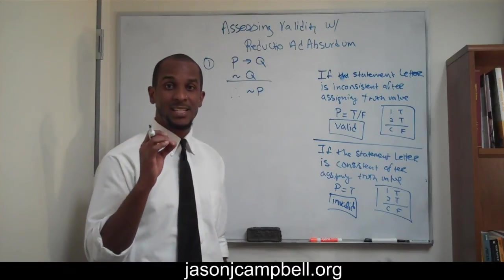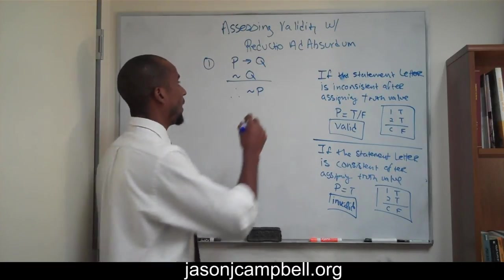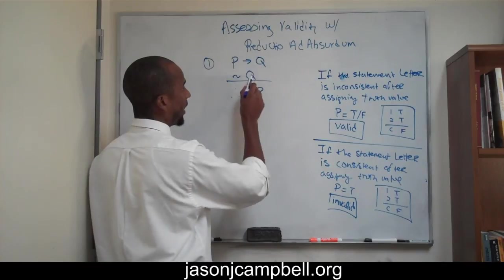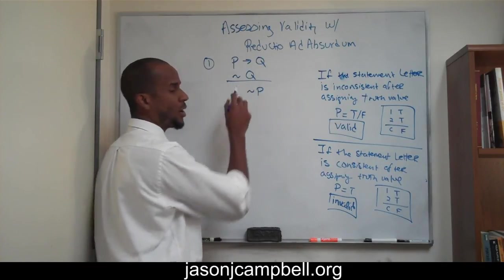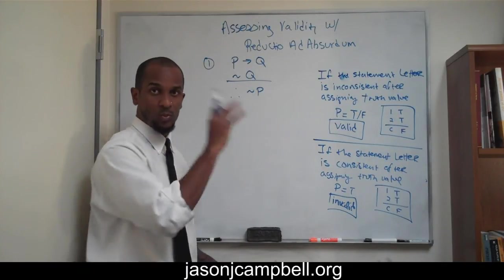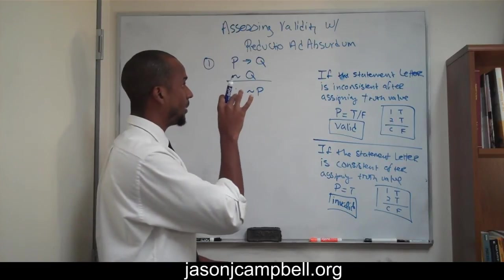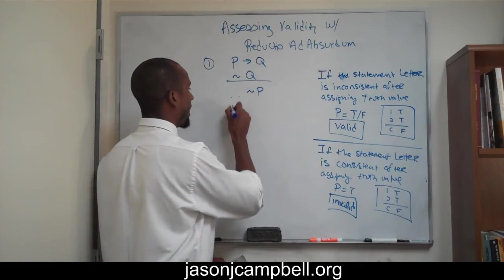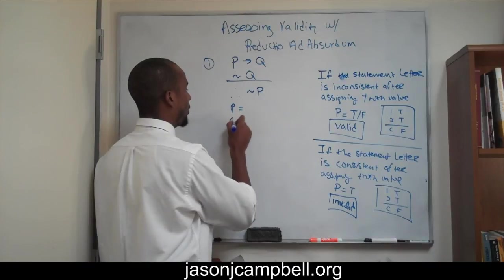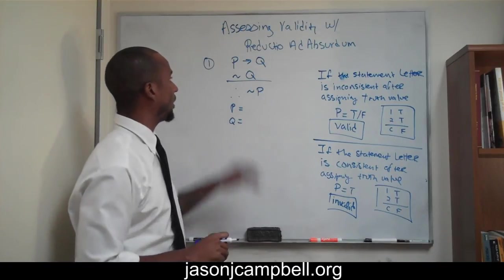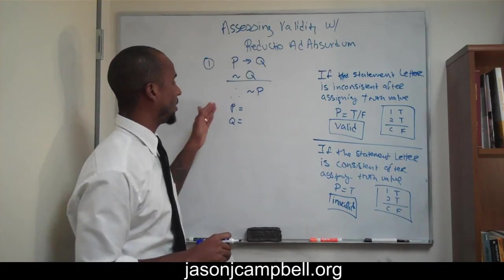Well, first what we need to do is we need to assign all of our variables. So in here we have P and we have Q. The not part, we're not going to be interested in the negation. We just want the statement letter. So we have P as a statement letter, and we have Q as a statement letter.